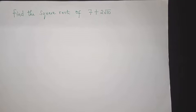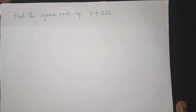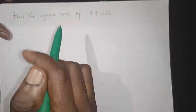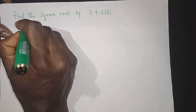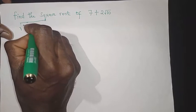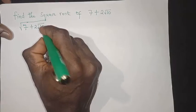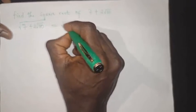In today's video we're going to solve this problem: find the square root of 7 plus 2 root 10. If you have to look for the square root of surds like this, we simply need to represent it this way. I'm going to say let the square root of 7 plus 2 root 10 be equal to root a plus root b.